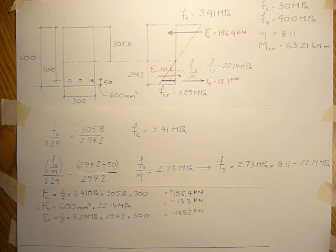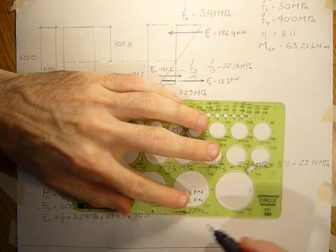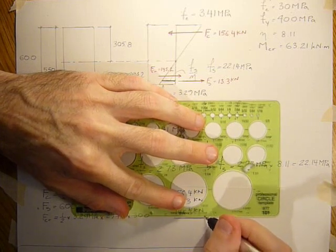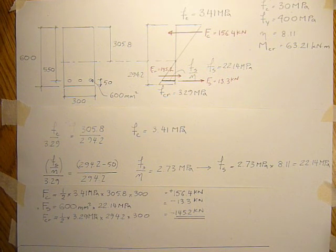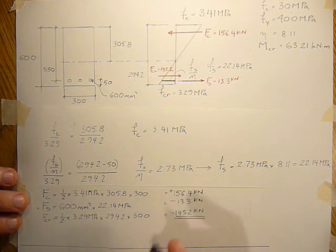So now we can sum the forces up. And we should get a number very close to zero. 156.4 minus 13.3 minus 145.2. That comes out to be minus 2.1 kN.